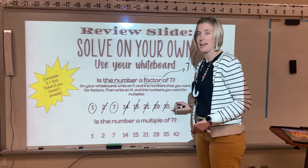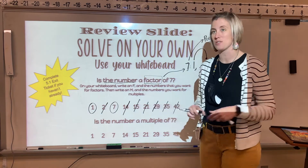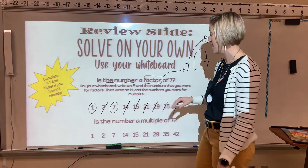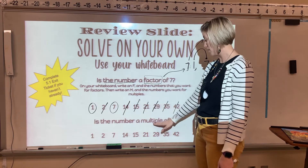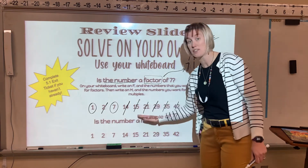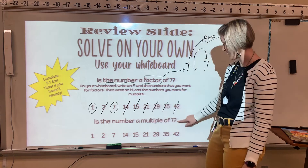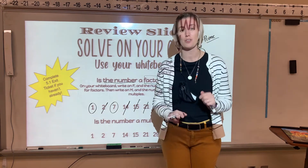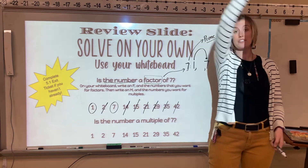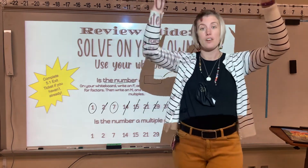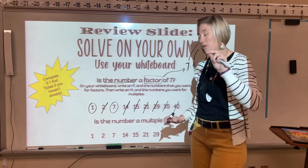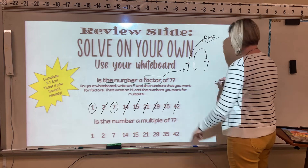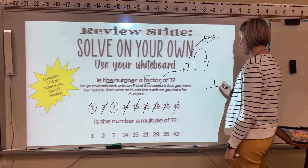They're trying to trick you — factor and multiple are very similar words. But if you remember our little song, 'The factors are the rainbow, the multiples are the list,' that will help you know: now I need to list multiples of 7. The reason they give you the same numbers with just that one word changed is to test whether you know the difference.